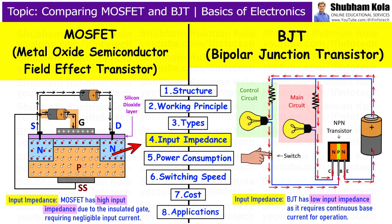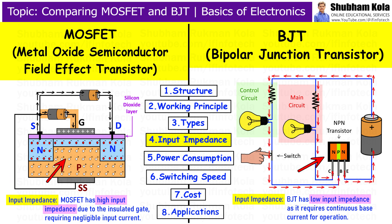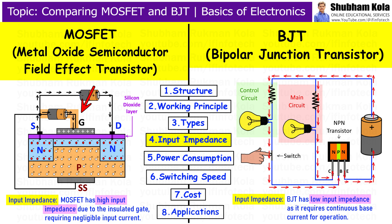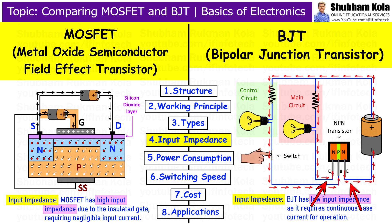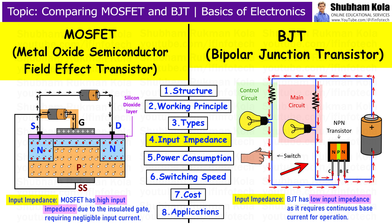Next is input impedance. In terms of input impedance, there is a significant difference between MOSFET and BJT. MOSFET has very high input impedance thanks to the oxide layer between the gate and channel. This means MOSFETs require very little input current to control the transistor, making them ideal for high impedance circuits. On the other hand, BJT has low input impedance because it relies on the base current to control current flow between the emitter and collector. A relatively large current is needed at the base to drive the BJT, making it less efficient in high impedance applications.